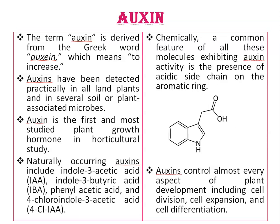It possesses an indole ring — just look at this diagram — this is the indole ring and a carboxylic acid group. Auxins have been detected practically in all land plants and in several soil or plant-associated microbes. Auxin is the first and most studied plant growth hormone in horticulture study.